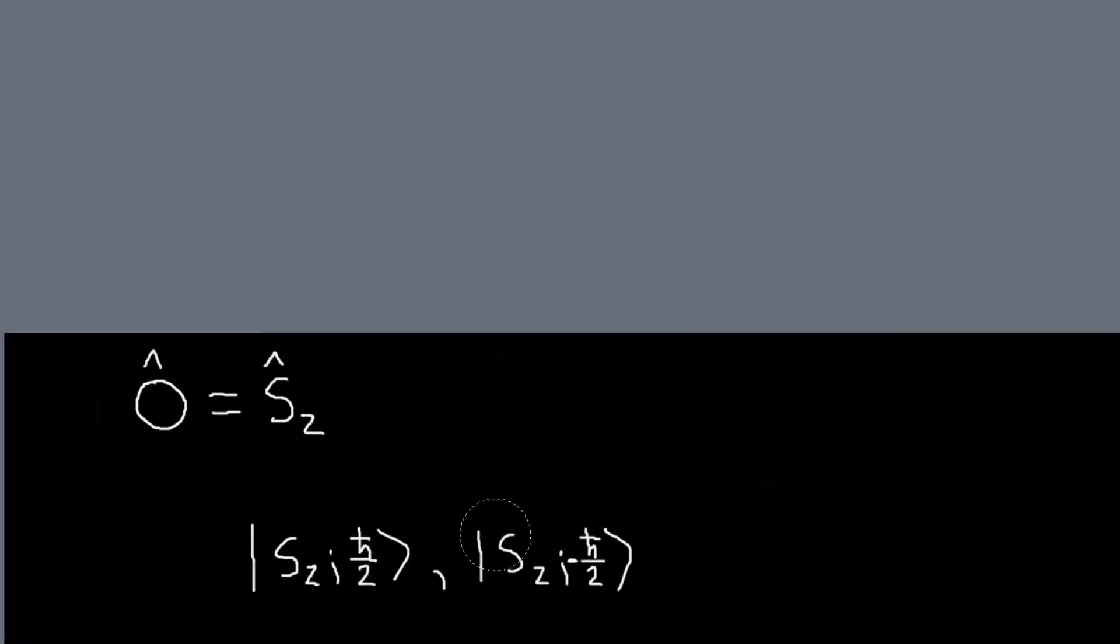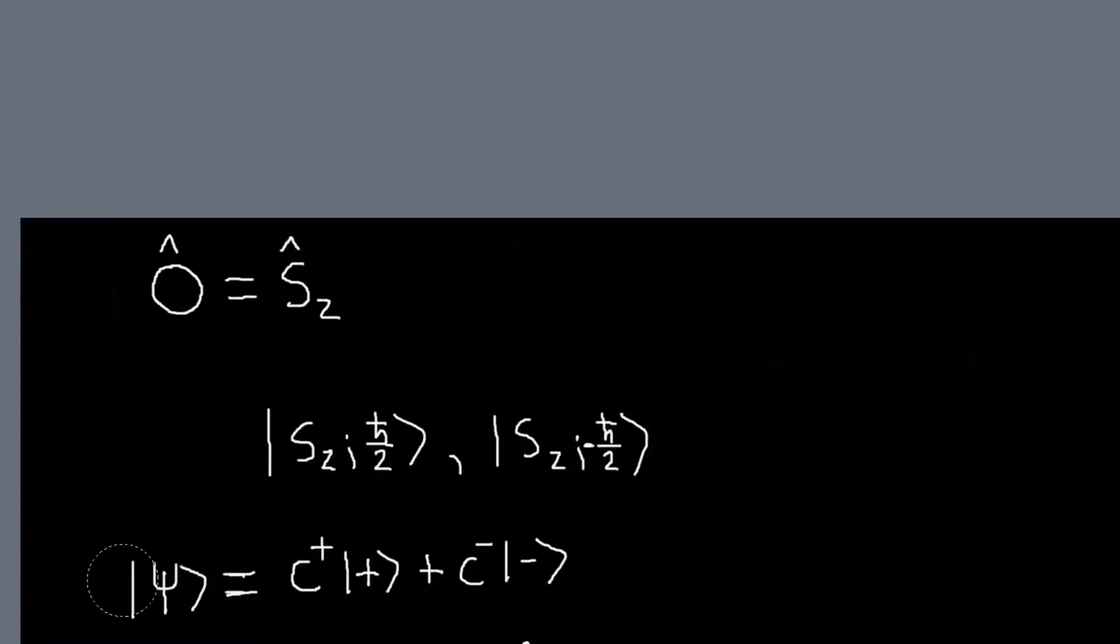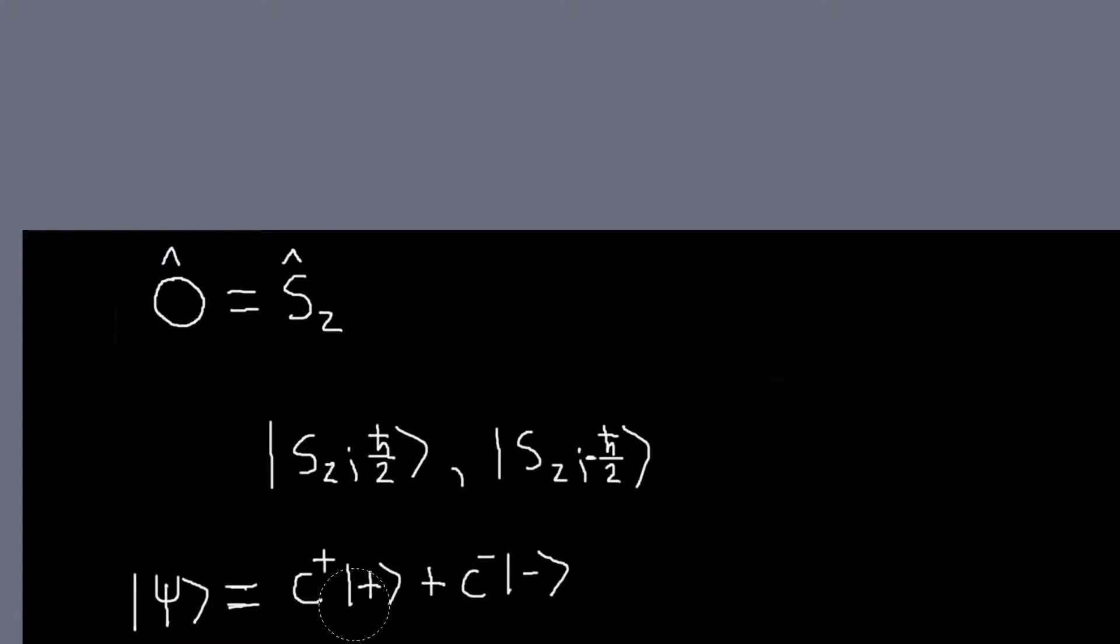But anyway, the point is there are two states, so we can expand our state vector as a linear combination of these basis states. And here I've just written plus and minus rather than all of this because it's just easier to write. And so this is how we will write a general expression for our state ket.